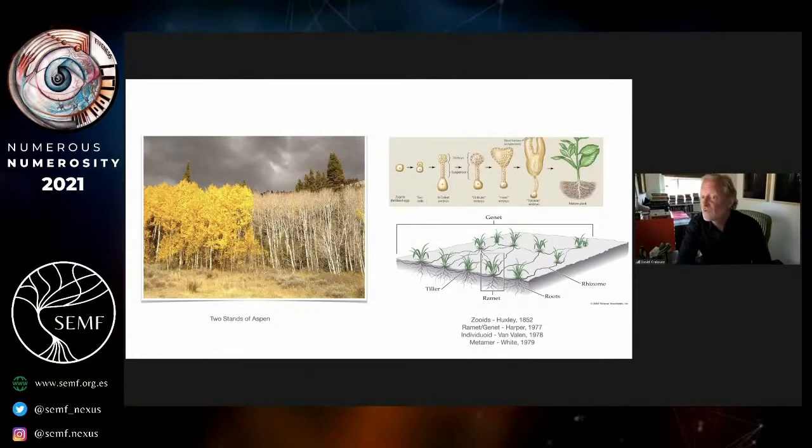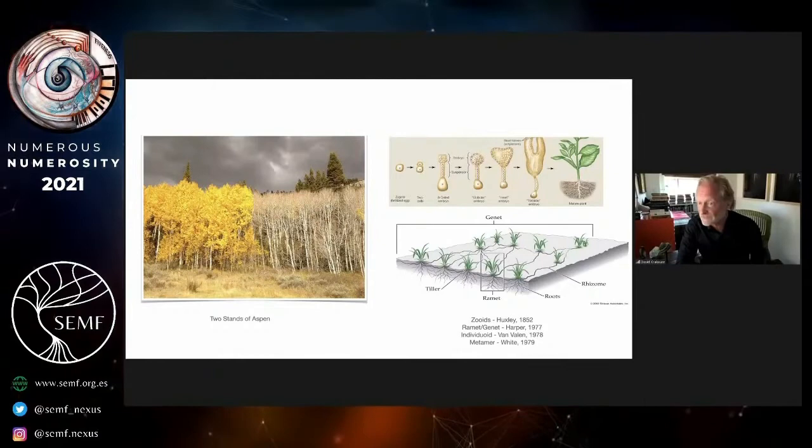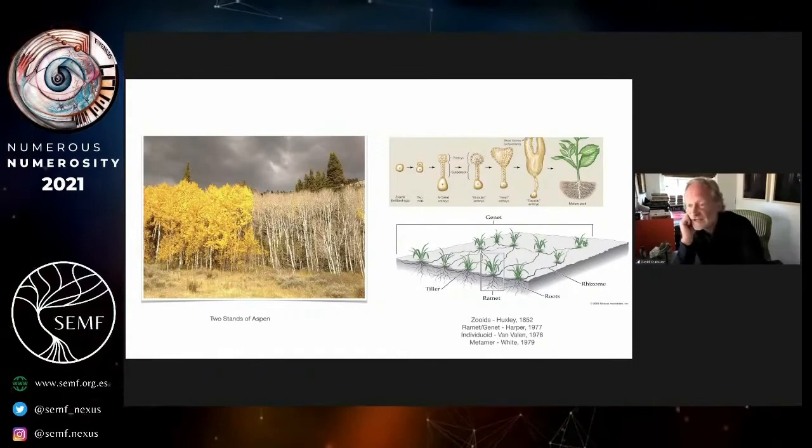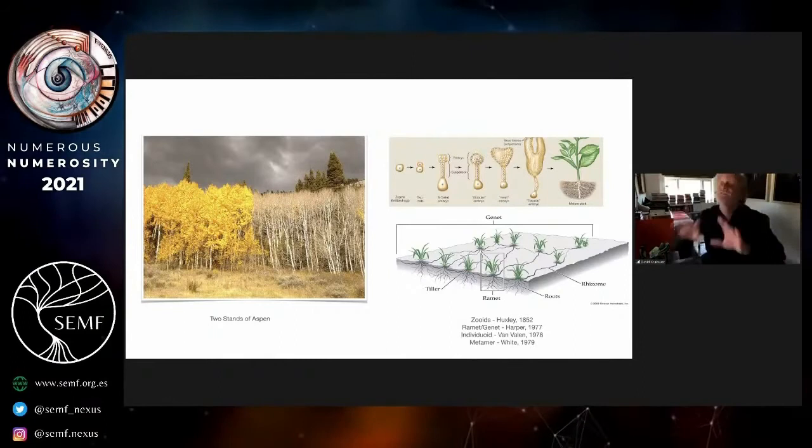Botanists make a distinction between the genetically coherent individual, the genet, versus various clones of itself that they would call ramets. By counting ramets, you correctly would guess tens or hundreds, but by counting genets, here there are two. The clue here is that they flushed their leaves at different times.